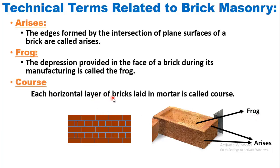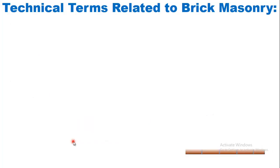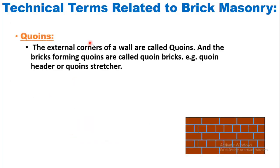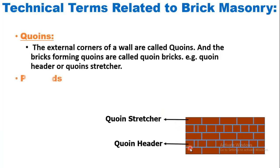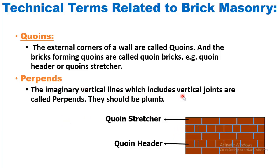Course: each horizontal layer of bricks laid in mortar is called a course. As you can see, there are 1, 2, 3, 4, 5 courses of brick. What are quoins? The external corners of a wall are called quoins, and the bricks forming quoins are called quoin bricks — for example, quoin header or quoin stretcher. Perpends: the imaginary vertical lines which include vertical joints are called perpends. They should be plumbed. As you can see, the joints formed between two bricks with the help of mortar in the vertical direction are called perpends.